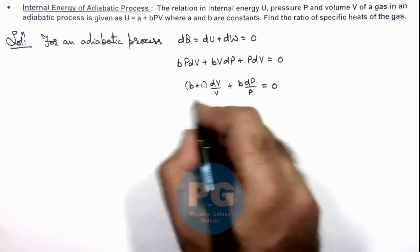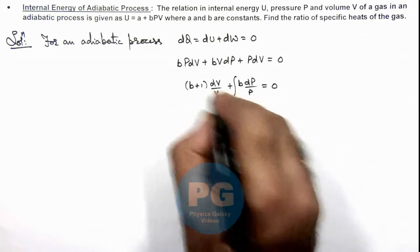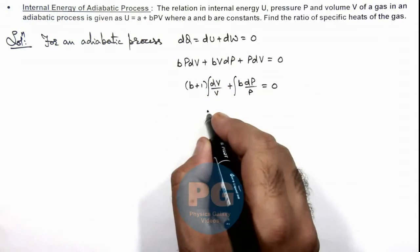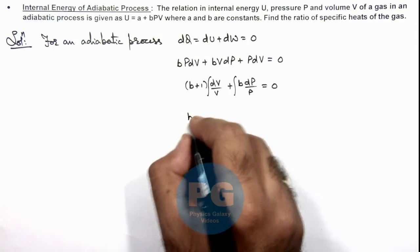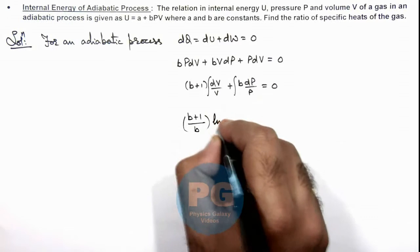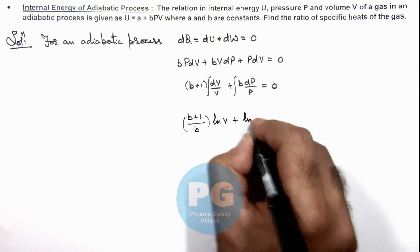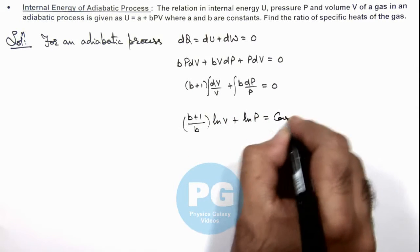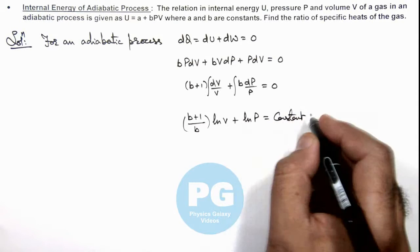And if we integrate this relation on the two sides, we can see this gives us (b + 1) times ln V plus ln P is equal to a constant, which is the constant of integration.